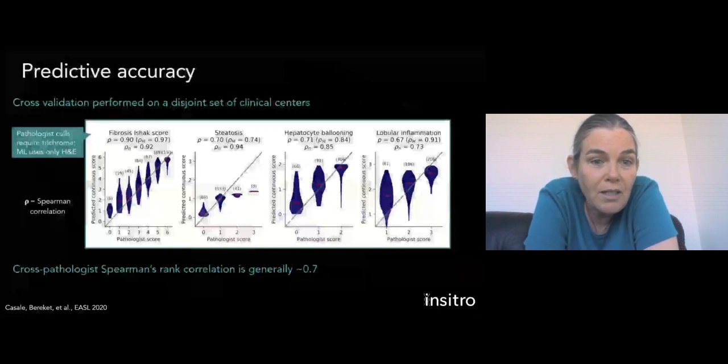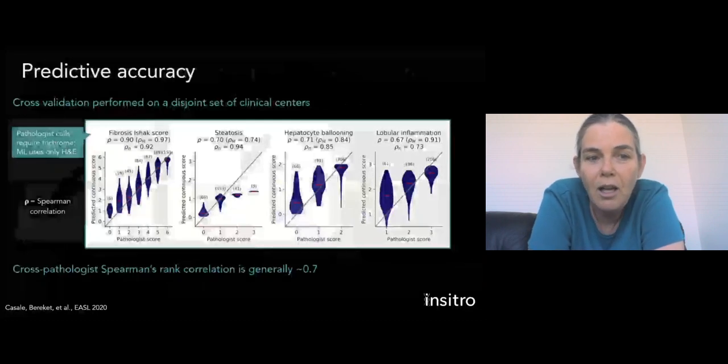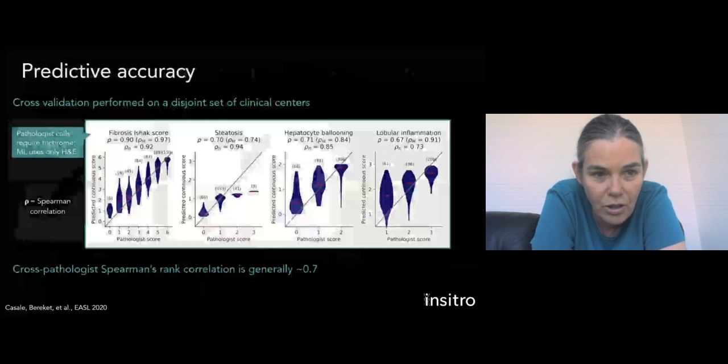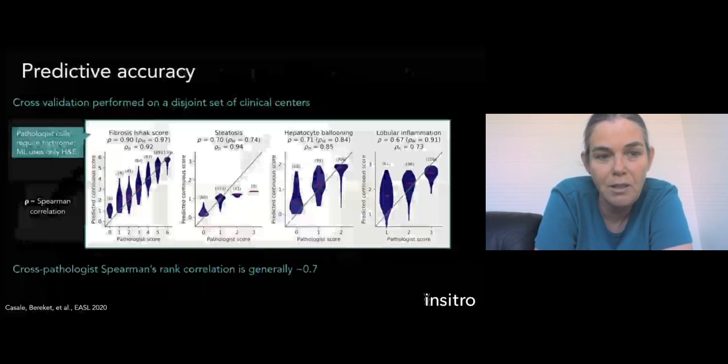What's also notable is that for fibrosis, this is not something that the pathologist typically calls using just a standard H&E stain. There's also an additional stain called trichrome that makes the fibrosis really stand out. Turns out that machine learning doesn't need that extra stain. The pathologist calls on fibrosis are as accurate as they are using only the H&E images, even though the pathologist would not be able to make similar calls using H&E alone.